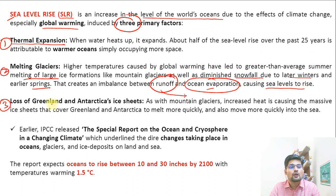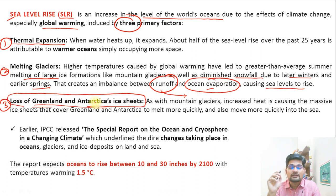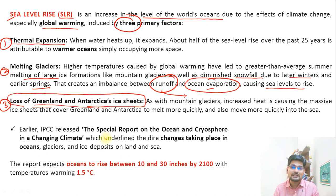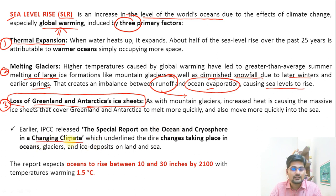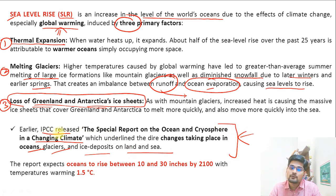The third primary factor is the loss of Greenland and Antarctica's ice sheets. If these major continental ice sheets are exposed to intense heating, they add more volume of water to the sea, thereby changing the sea level apart from salinity and temperature changes. These are the three major primary factors of prime importance in terms of global warming and sea level rise. The IPCC released a special report on ocean and cryosphere in a changing climate, which underlined these dire changes taking place in the oceans, glaciers, and ice deposits on land and sea.